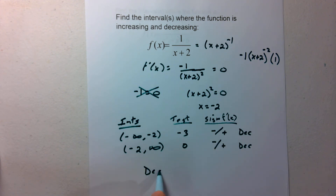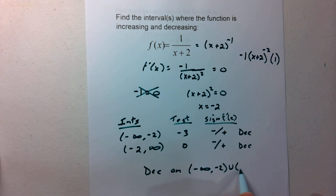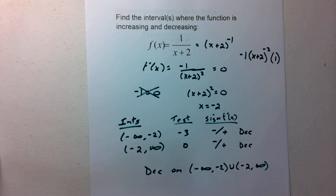We can write this as one clean statement: the function is decreasing on the intervals negative infinity to negative 2, union negative 2 to infinity.